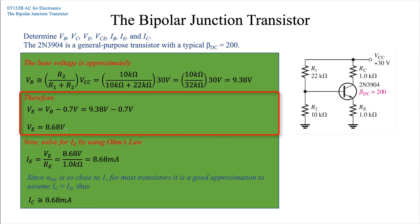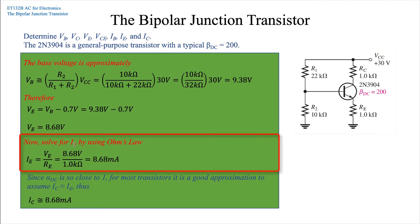Now we can solve for the current through the emitter by using Ohm's law. So VE, which we just solved for, divided by the resistor value of 1k ohm: 8.68 volts divided by 1k ohm gives us 8.68 milliamps of current through the emitter resistor.